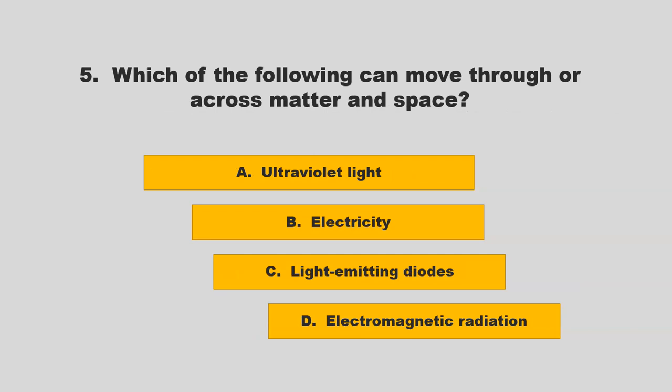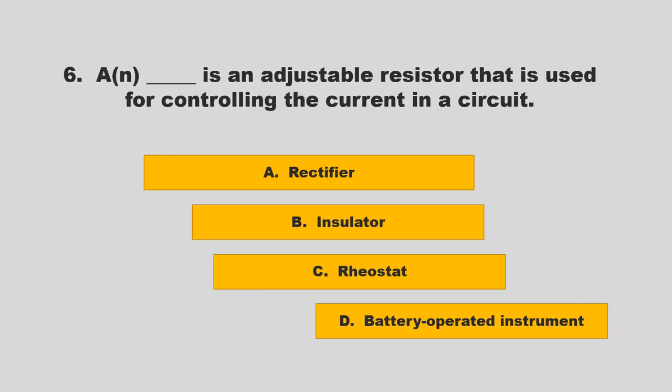Which of the following can move through or across matter in space? Is it ultraviolet light, electricity, light emitting diodes, or electromagnetic radiation? If you chose B, electricity, you are correct.